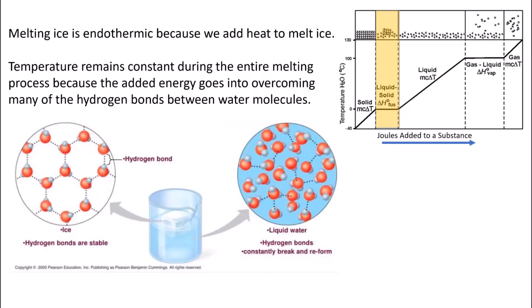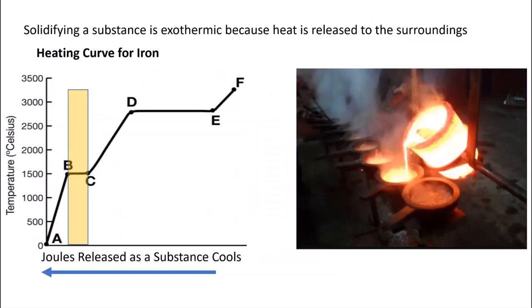We're going to take a look at the orange region. Melting ice or any substance is endothermic because we have to add heat. The temperature remains constant during the entire melting process because the added energy goes into overcoming many of the hydrogen bonds between water molecules. However, when we cool a substance, when it goes from a liquid to a solid, it's exothermic. This may seem counterintuitive when you think about water freezing at zero degrees Celsius, but let's instead think about molten iron, which solidifies at 1500 degrees Celsius. As we pour molten iron into a mold and it solidifies, it's going to be releasing energy to the surroundings, so it is exothermic.